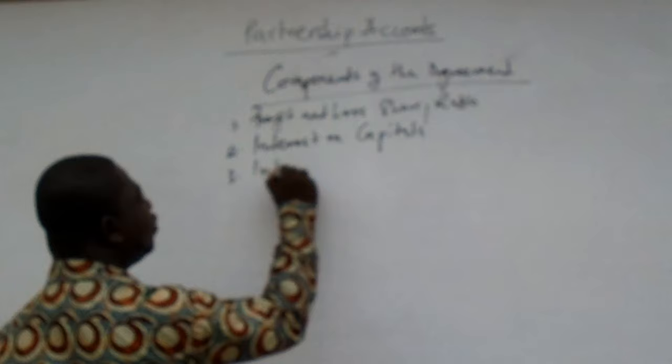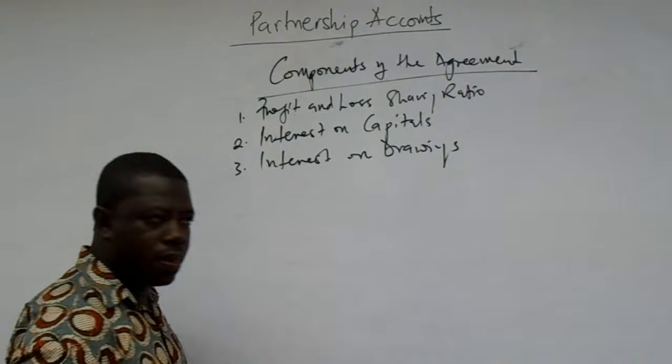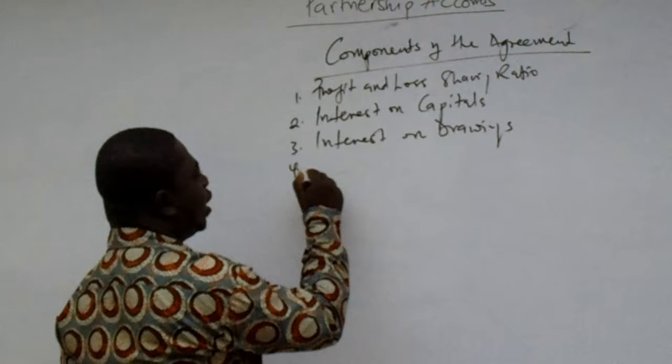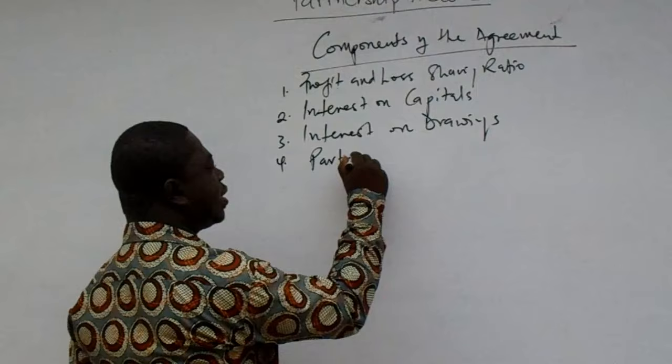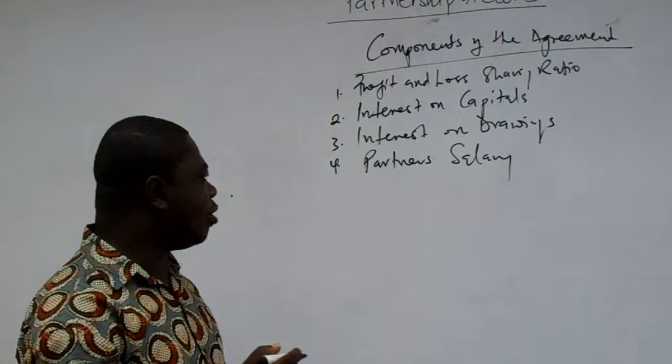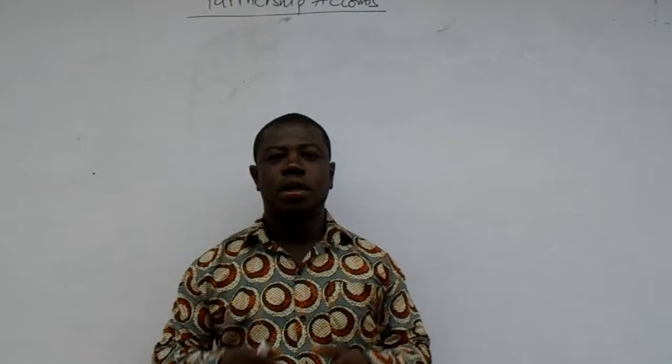If there is any interest to be charged on drawings, that should be stated as well. And if there is any partner that should receive a salary, the partner's salary or partner's remuneration for an active partner should also be stated in the agreement. So these are some of the things that should be in the partnership agreement.